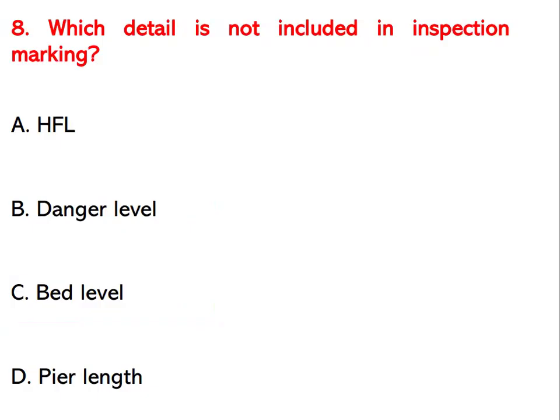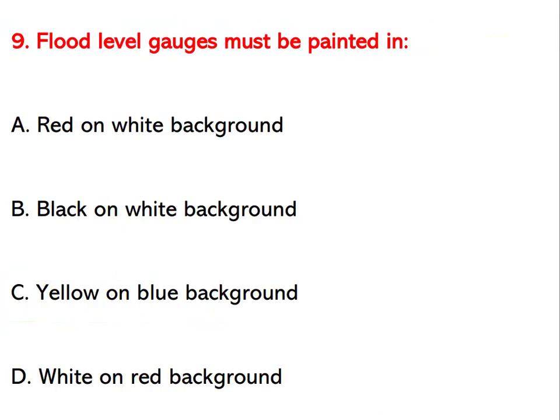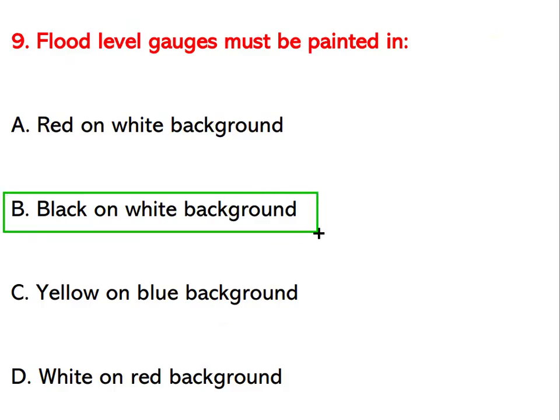Which detail is NOT included in inspection marking? Options are HFL, danger level, bed level, or pier length. Bed level is not marked. Flood level gauge must be painted in which color? Options are red on white background, black on white background, yellow on blue background, or white on red background. The right answer is black on white background.